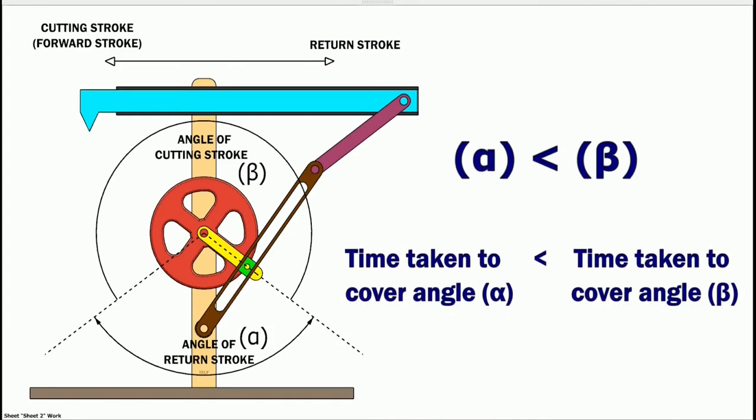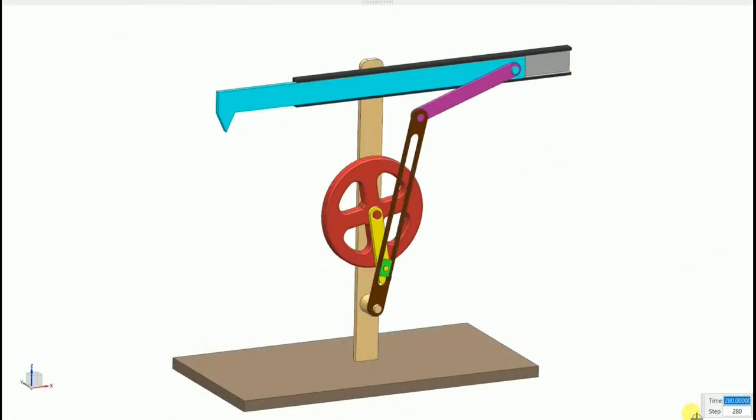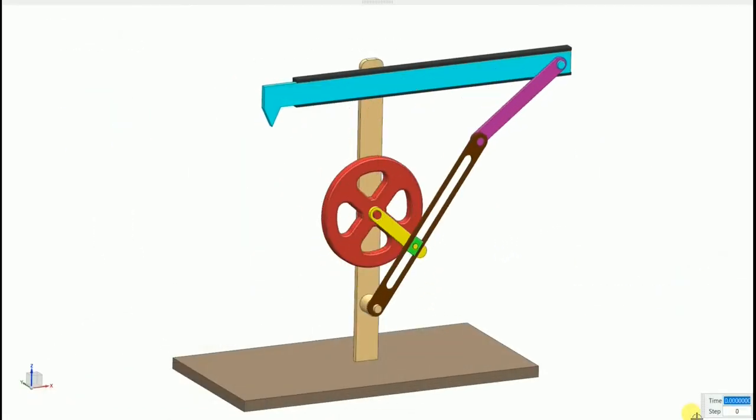As the crank moves with uniform angular velocity, time taken to cover angle alpha will be less than the time taken to cover angle beta. Hence the return stroke of the ram is faster than the forward stroke.